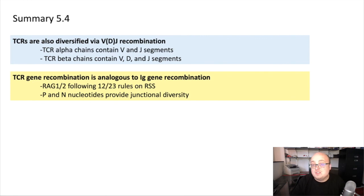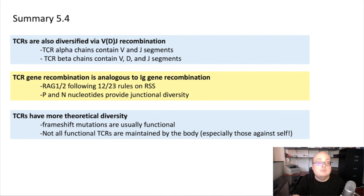P and N nucleotides are added by the same enzymes and provide junctional diversity for the T-cell receptor. The main difference was that TCRs have more theoretical diversity compared to immunoglobulins. They're not as bothered by frameshift mutations, so we can tolerate more mutational divergence, particularly in the D segments. The caveat though is that not all functional TCRs are maintained by the body, especially those that recognize self-antigens.